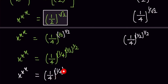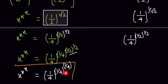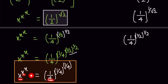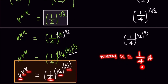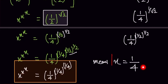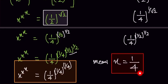We can now see that x = 1/4 matches on both sides, so the value of x is equal to 1/4. That is our answer. Thank you so much for watching. If you like the video, please subscribe to our channel and share it with your friends.